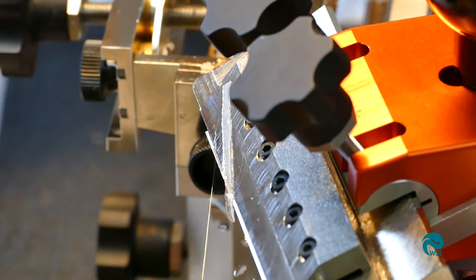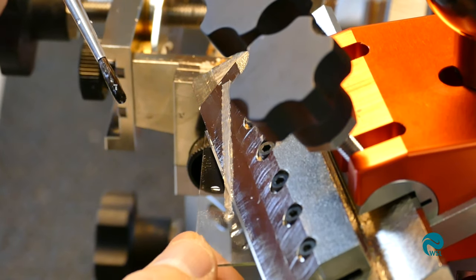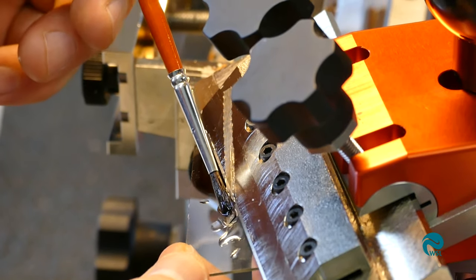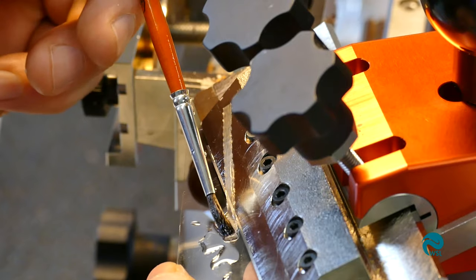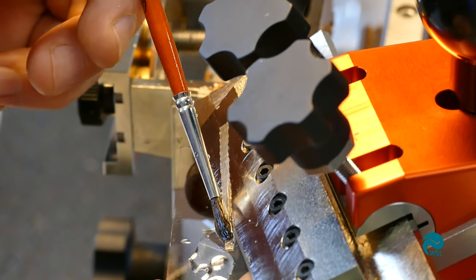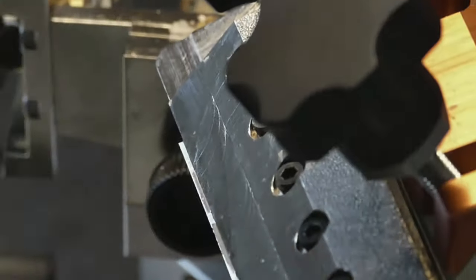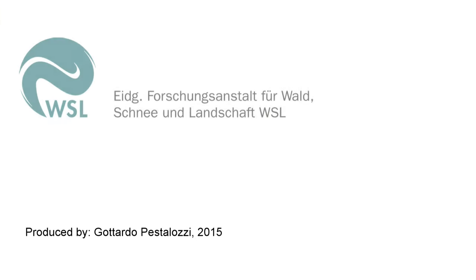The freshly cut section can now be removed from the blade and transferred directly to a glass slide using a paintbrush.